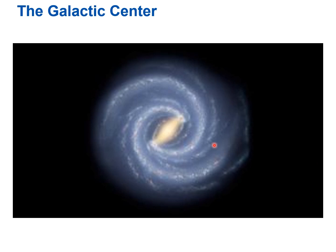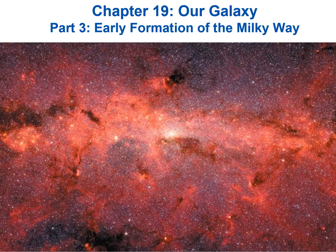Our galaxy has the black hole at the center with its 4 million solar masses, and our sun and solar system is out in the disk. As noted, the galaxy's mass of about 1 trillion solar masses — stars, gas, dust, and everything else — is pretty uniformly spread throughout the galaxy, not concentrated at the center. That is the end of Part 3 on the Milky Way galaxy and the early formation of the Milky Way. Have a great day.